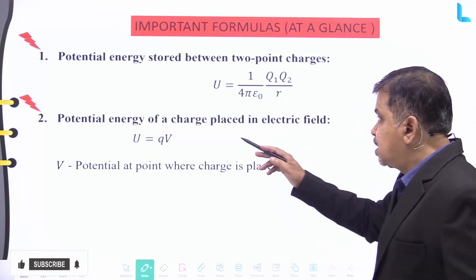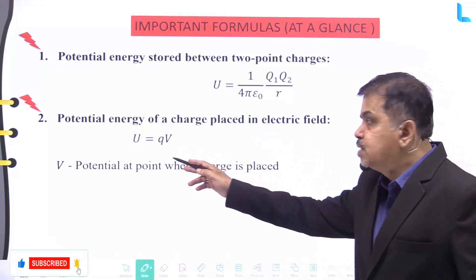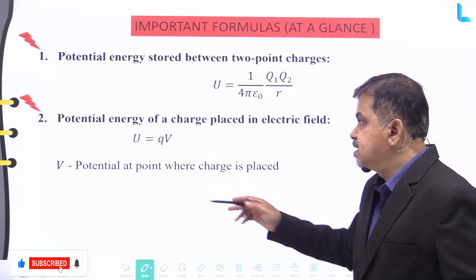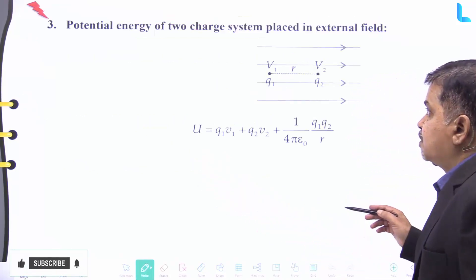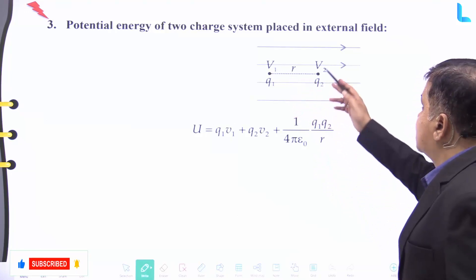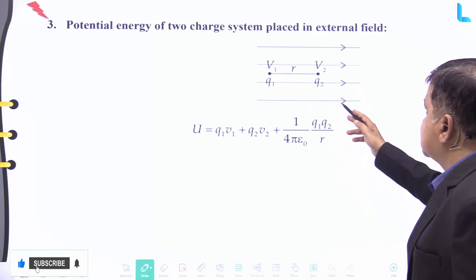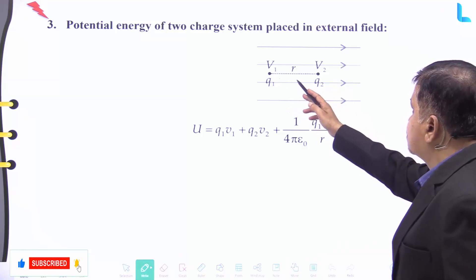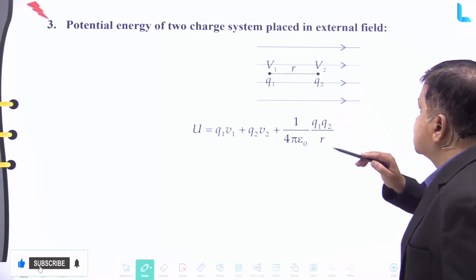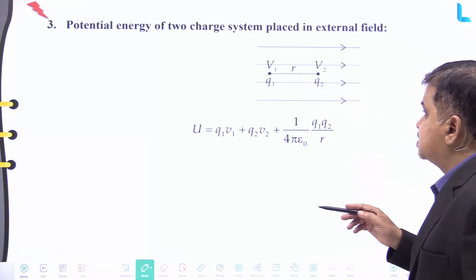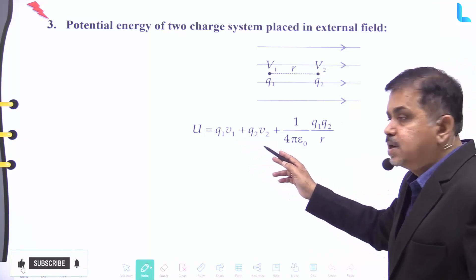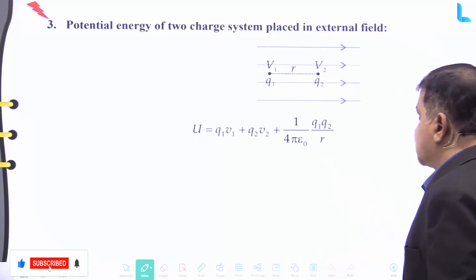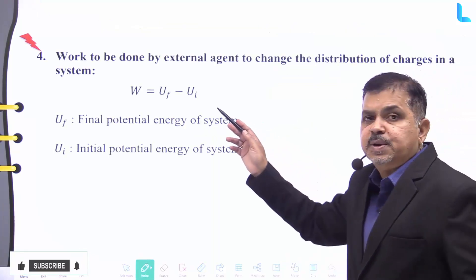Number two: the potential energy of a charge placed in an electric field is given by U = qV, where V is the potential at the point where the charge is placed. Number three: the potential energy of a two-charge system placed in an external field — charges q1 and q2 at potentials V1 and V2, separated by distance r — is given by U = q1V1 + q2V2 + (1/4πε₀)·(q1·q2)/r.